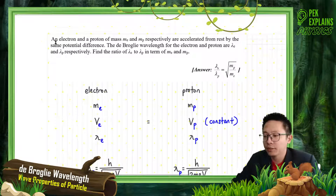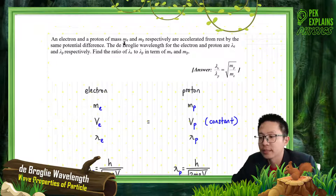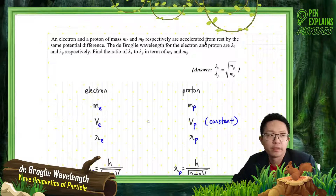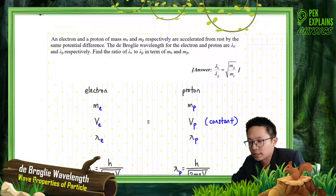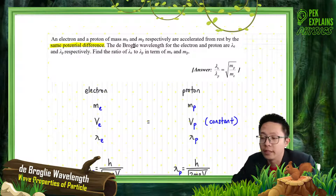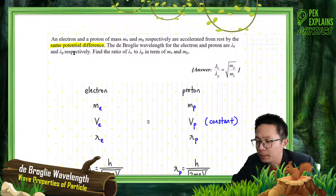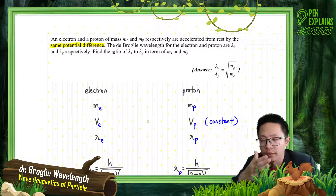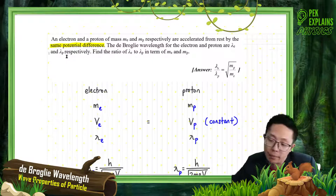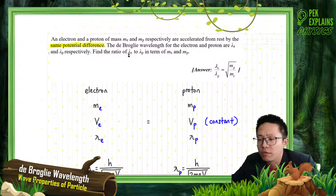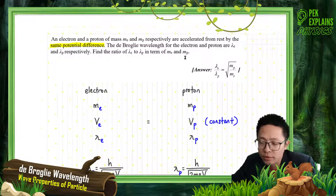An electron and a proton of mass — mass of electron and mass of proton respectively — are accelerated from rest by the same potential difference. Here it says same voltage, same potential difference. This is very important. The de Broglie wavelength for the electron and proton are lambda E and lambda P respectively. Find the ratio of lambda E to lambda P in terms of mass of electron and mass of proton.